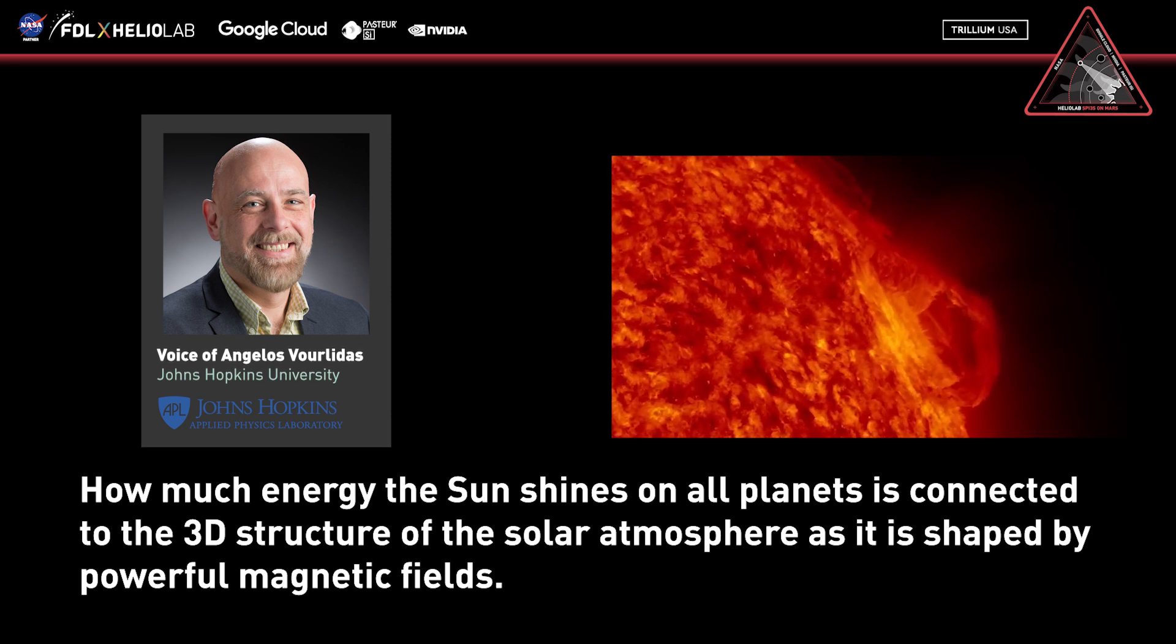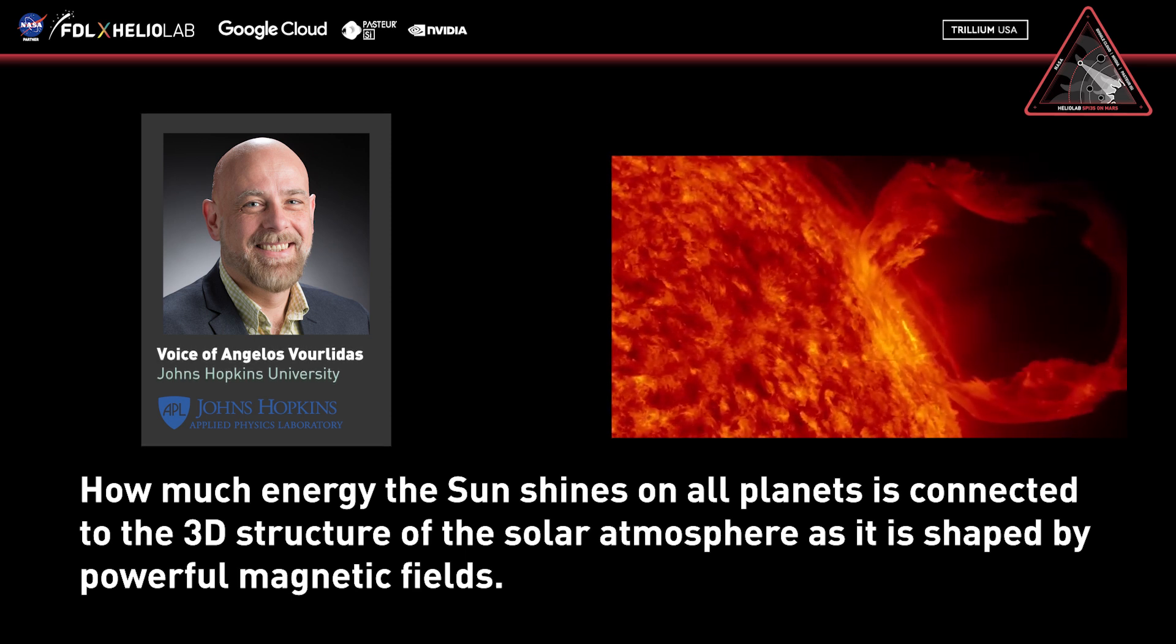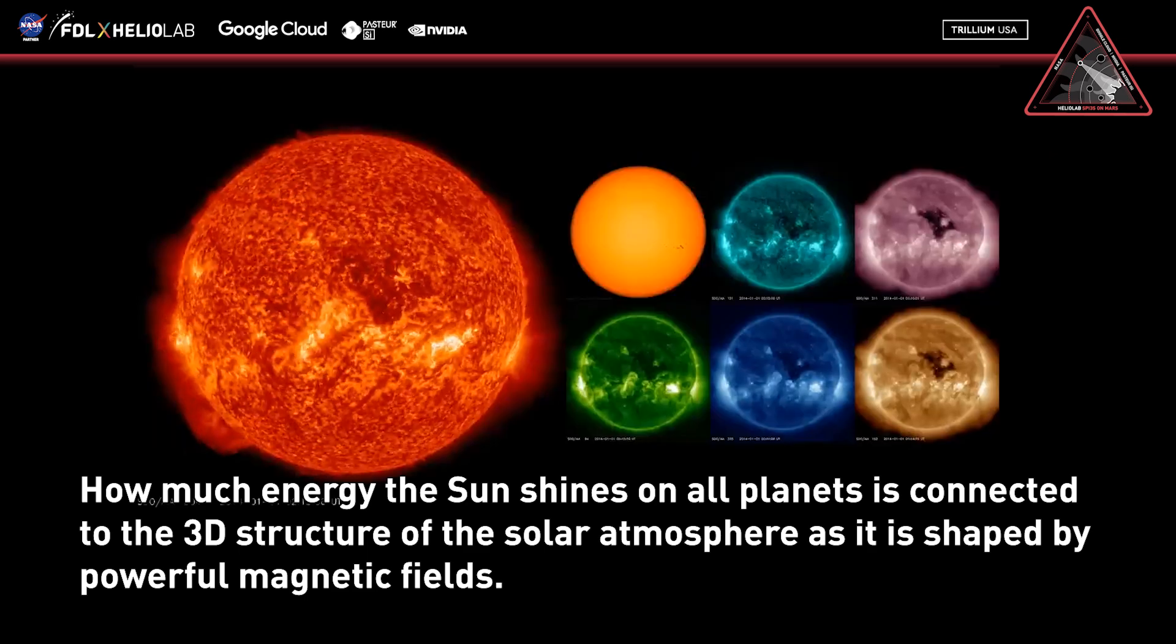How much energy the sun shines on all planets is connected to the 3D structure of the solar atmosphere as it is shaped by powerful magnetic fields.